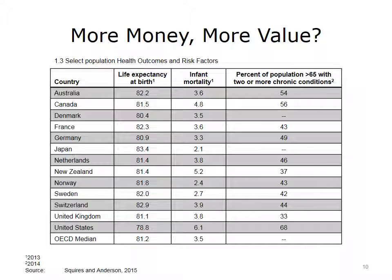This table shows U.S. health outcomes compared to the same 12 nations that spend less money. For average life expectancy, the U.S. has 78.8 years — not living longer than comparable countries. The U.S. also has the highest infant mortality rate at 6.1 per 1,000 babies born. And 68% of those age 65 and older have two or more chronic conditions, compared to Canada's 56%. Overall, the U.S. is not getting better health outcomes and is spending a lot more money.